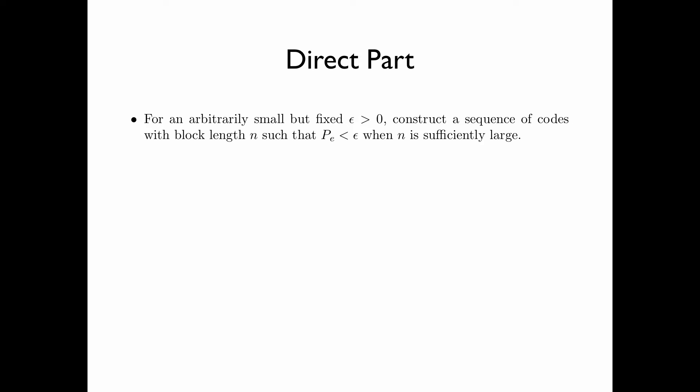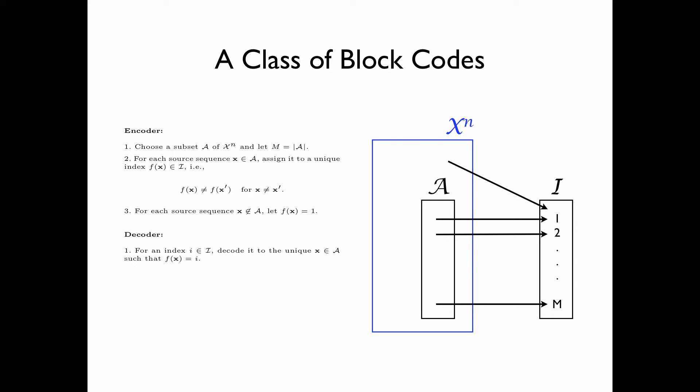To prove the direct part of the source coding theorem, for an arbitrarily small but fixed epsilon greater than 0, we need to construct a sequence of codes with block length n such that the error probability is less than epsilon when n is sufficiently large. We consider a class of block codes with a particular structure: decode to the unique x in A such that f equals i. If the source sequence x is in A, then it is decoded correctly; if not, it is decoded incorrectly. Therefore, the error probability equals the probability that the random sequence is not in A.